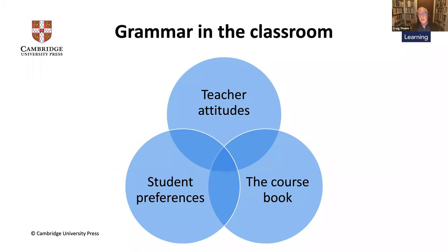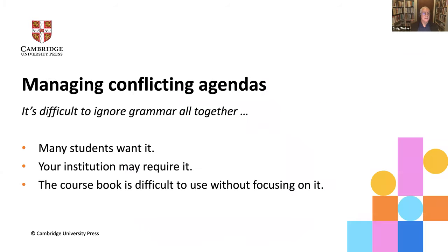Let's bring these three ideas together: teacher attitudes, student preferences, and the course book. These converge when we are in the classroom teaching a lesson. Ideally, you arrive at a sweet spot in the middle where all three converge and everyone's happy. But the reality is that's often not the case — teacher attitudes and the course book will differ, or student preferences and teacher attitudes will differ. When the three don't converge, we have conflicting agendas. So how do we manage those?